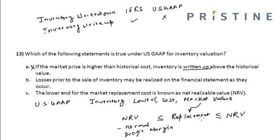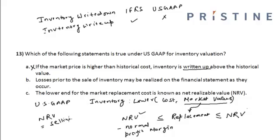If the replacement cost is greater than net realizable value, we take the net realizable value. If the replacement cost is less than net realizable value minus normal profit margin, we take net realizable value minus normal profit margin as the market value. Net realizable value is the selling price of the inventory minus the selling cost associated with selling that inventory.